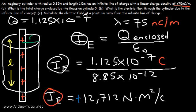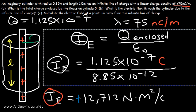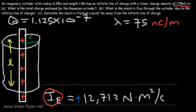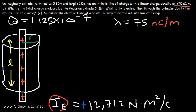Now what about part C: calculate the electric field at a point 3 meters away from the infinite line of charge. We're going to derive the formula for the electric field from an infinite line of charge using Gauss's law, then use that formula to get the answer. Let's begin with Gauss's law: the electric flux equals the total charge enclosed by the Gaussian surface divided by epsilon sub-nought.